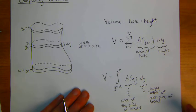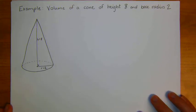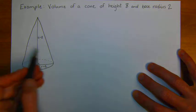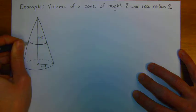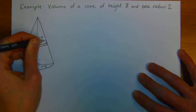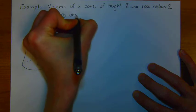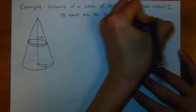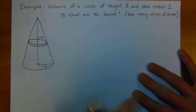So let's go ahead and look at an example of this. My first example is going to be finding the volume of a cone of height 8 and base radius 2. We're going to do this using the method that we saw before. I'm going to slice this up like a bunch of slices of bread, and each piece of this cone I'm going to approximate by a cylinder. The two questions that I ask myself, maybe my first question is going to be, what are the bounds?